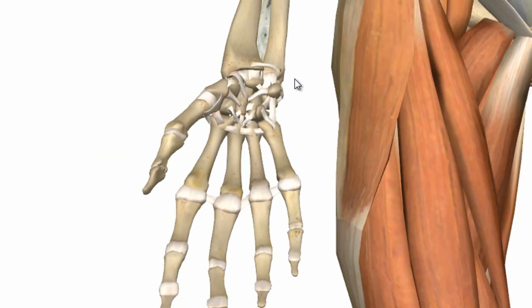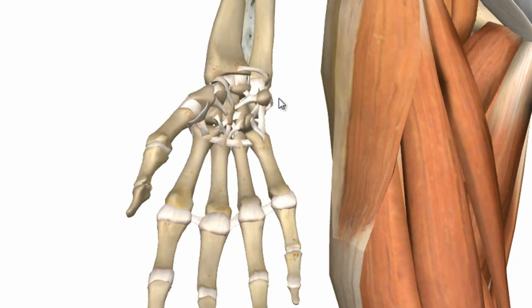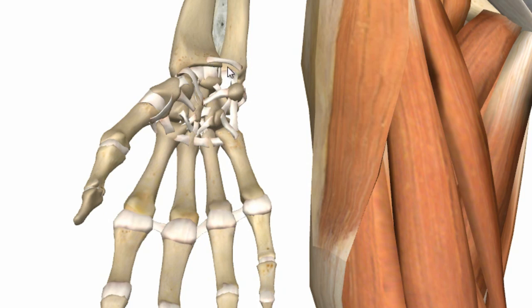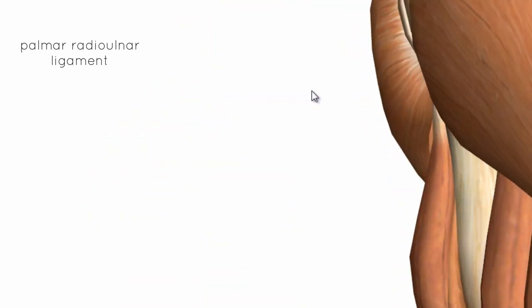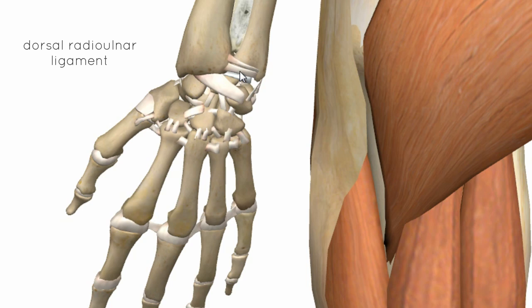Let's take a look at some of the ligaments in this area. You've got collateral ligaments, and you've got ligaments connecting the radius and ulna to the carpal bones — radiocarpal and ulnocarpal ligaments — on both palmar and dorsal sides. At the distal end of the radius and ulna, the ligament on the palmar surface is the palmar radio-ulna ligament, and on the dorsal surface you've got the dorsal radio-ulna ligament.